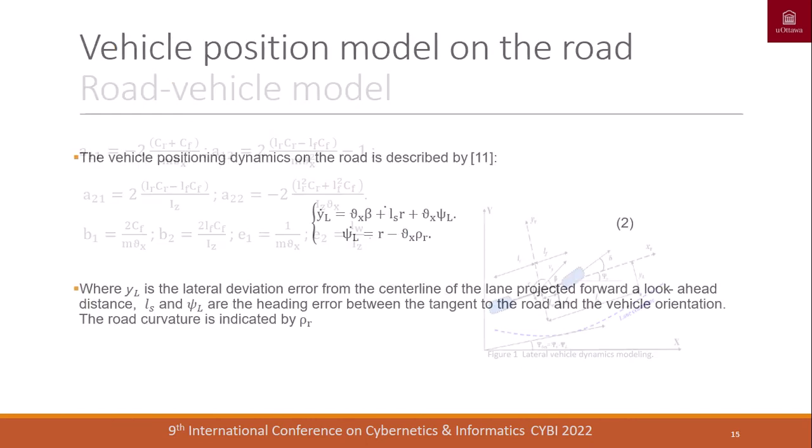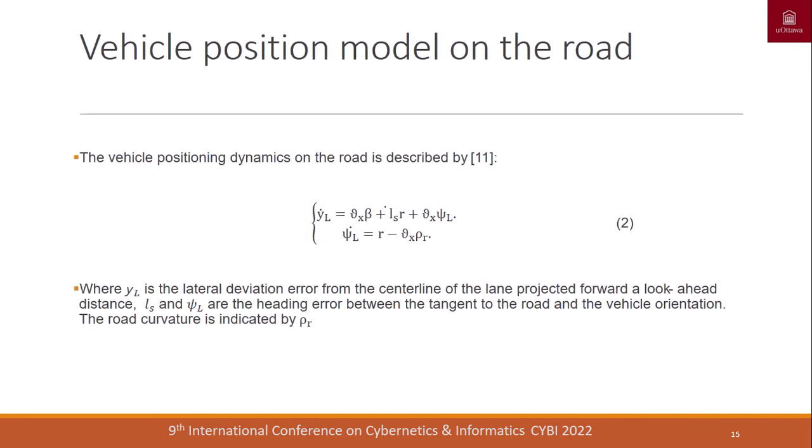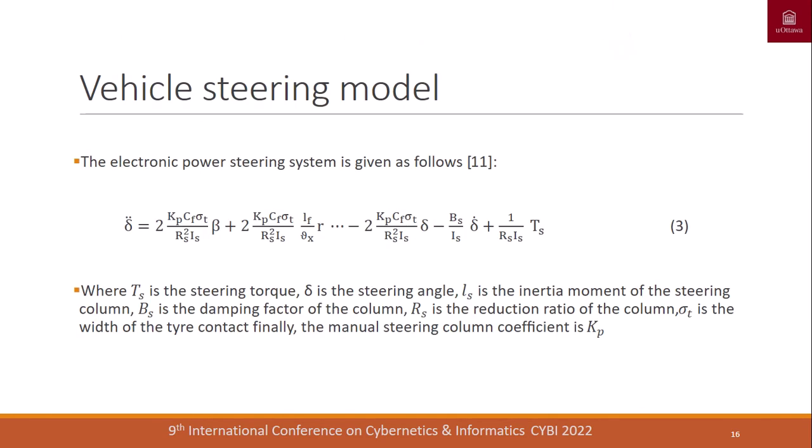The second model is the vehicle position model on the road, given by equation two and also presented by Rajamani. Here, Y_L is the lateral deviation error, Phi_L is the heading error, and phi_r is the road curvature.